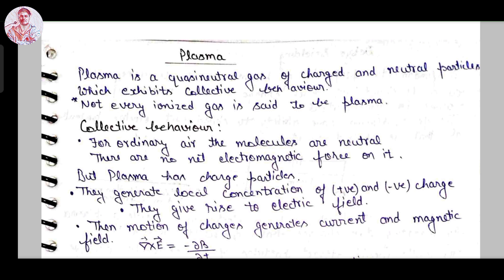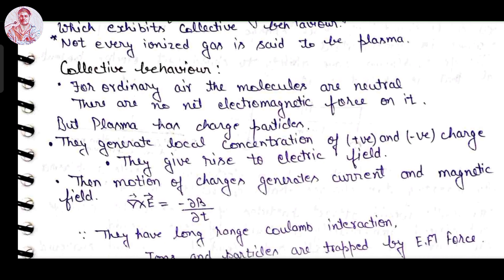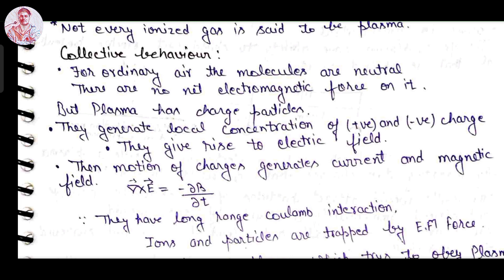Now let's see what is plasma. Plasma is a quasi-neutral gas of charged and neutral particles which exhibit collective behavior. Basically plasma is an ionized gas, but not all ionized gas is said to be plasma. For ordinary air, the molecules are neutral — there is no net electromagnetic force on it. But plasma has charged particles; they generate local concentration of positive and negative charges, which gives rise to an electric field.